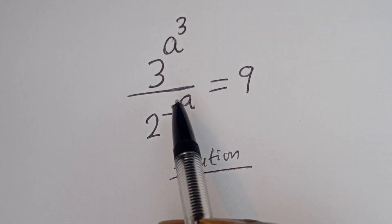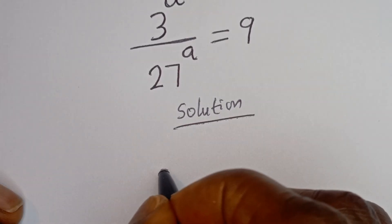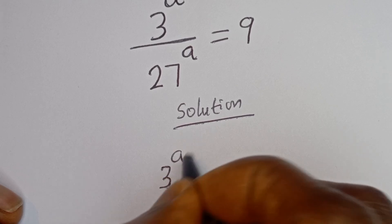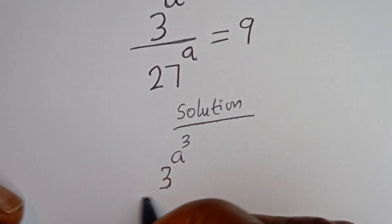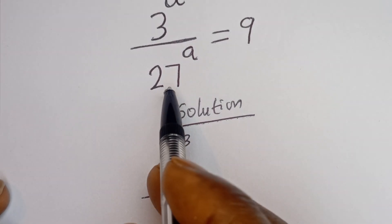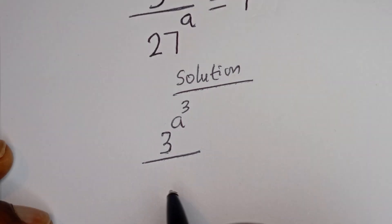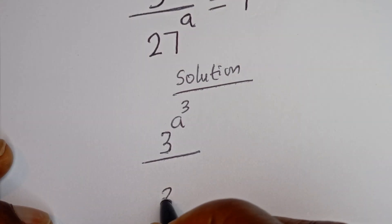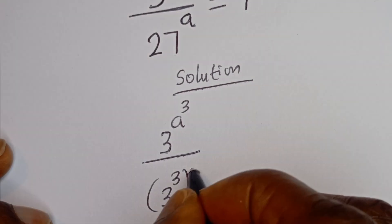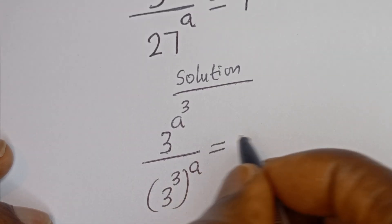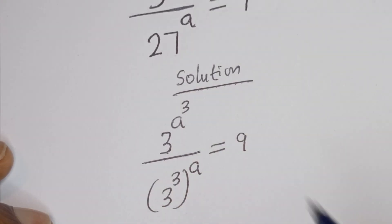From here we have 3 to the power of A to the power of 3, divided by 27 to the power of A, can be written as 3 to the power of 3 to the power of A, is equal to 9.